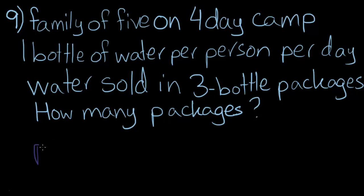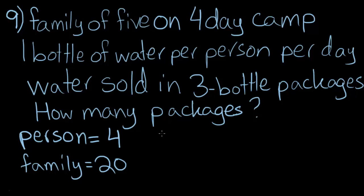So each person will need, since it's one bottle per day and they're each on a four-day trip, each person will need four bottles of water. Now there are five people, so the number of bottles needed for the entire family is 20. Now it says the water is only sold in three bottle packages. So we need to divide 20 by three to see what we get. And that's about equal to 6.66 repeating. Or rounding it up, seven, because we don't want them to have less bottles of water than they should. And that's the correct answer.